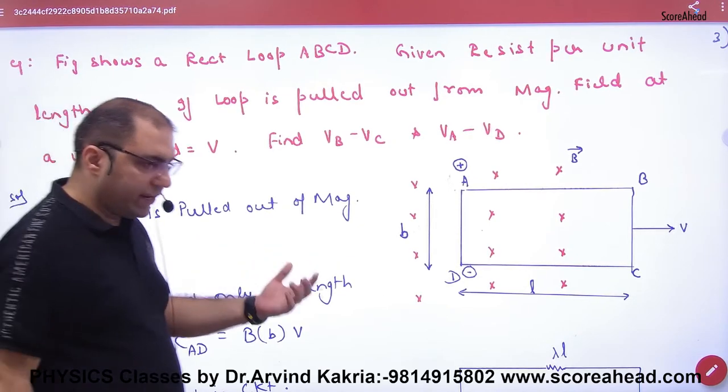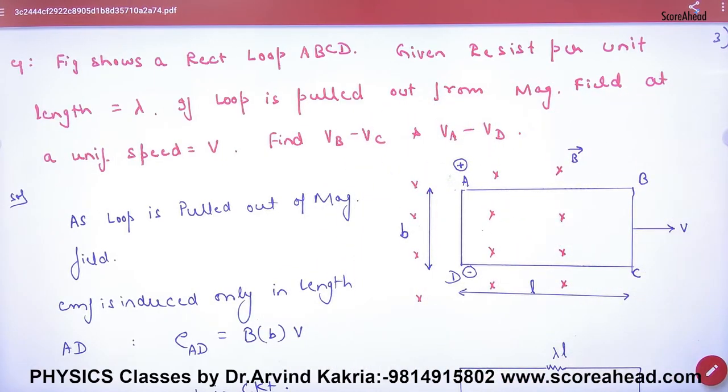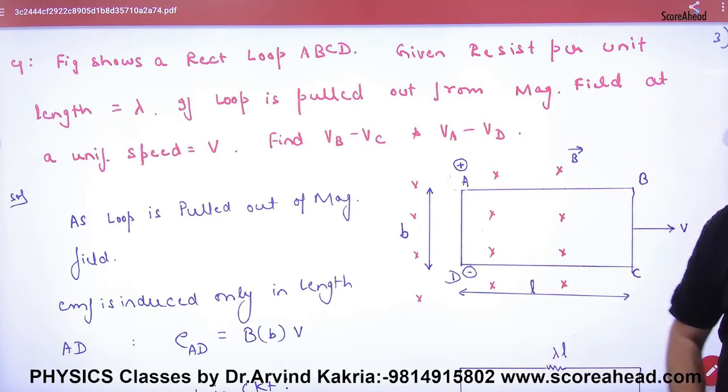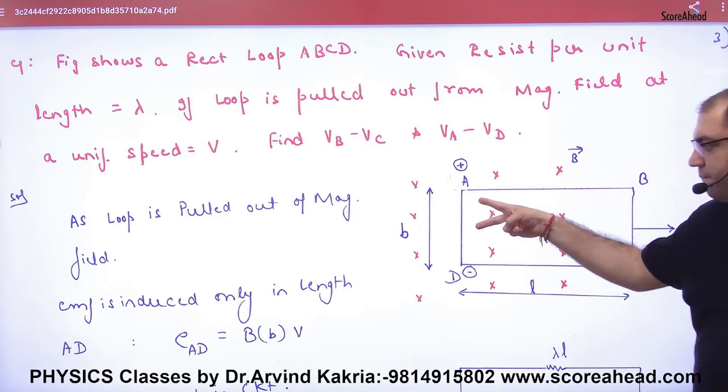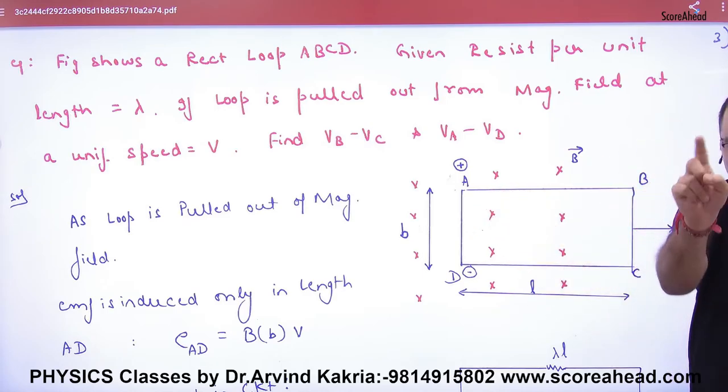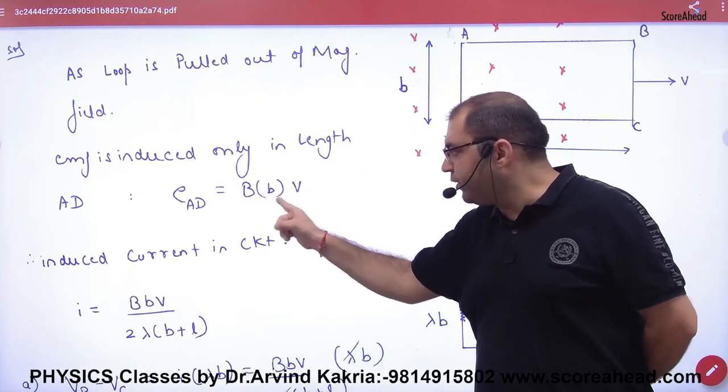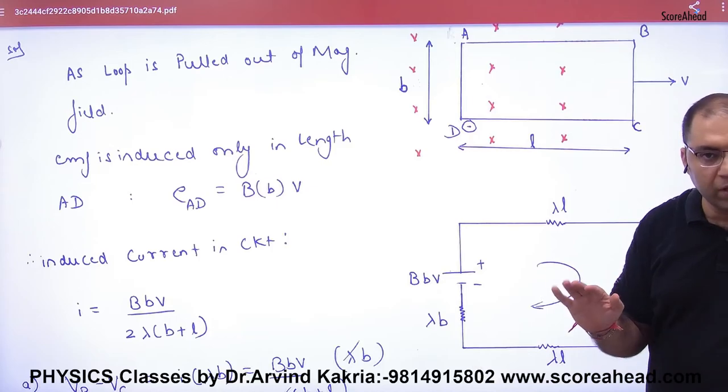Look inside this figure. This figure is outside the magnetic field, and its width is L and it is B. So when it is outside and the uniform speed is V, so what will you take? VB minus VC and VA minus VD potential difference. And what is given? Resistance per unit length value is given lambda. So in this case, here and here EMF will not be, only here. And how will be? What will be BLV. And what will be B? So what is motional EMF? B into length into V. First point clear. And what is resistance?